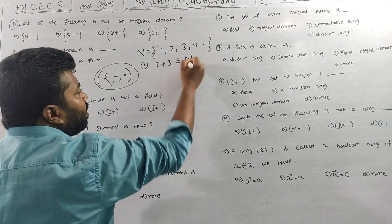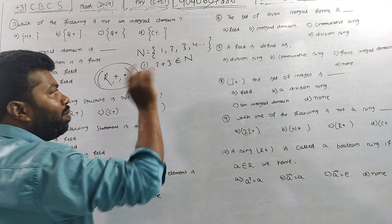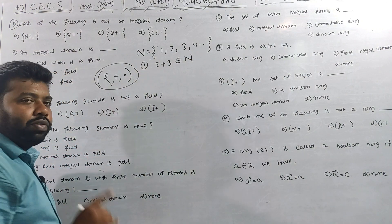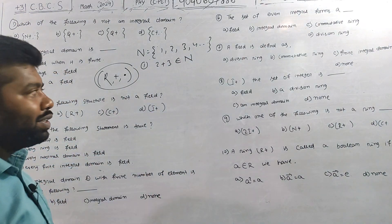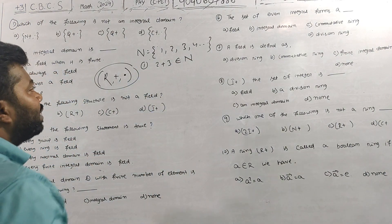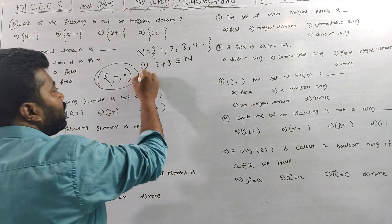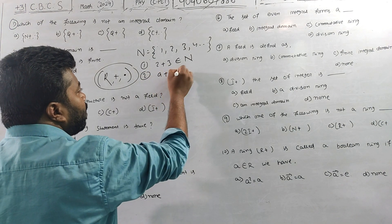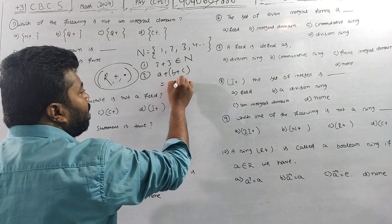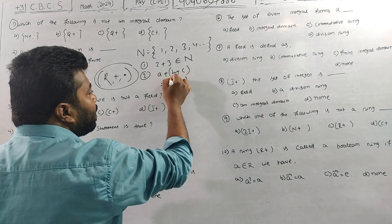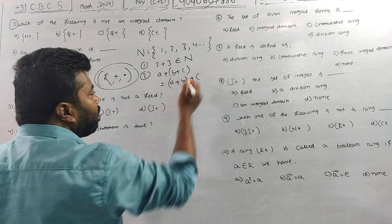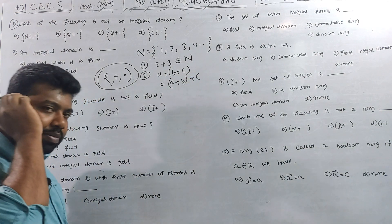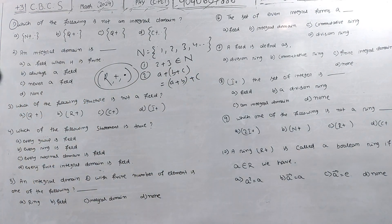The closure property is satisfied. The second property, associative property: a + (b + c) is equal to (a + b) + c. The associative property is satisfied.